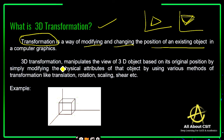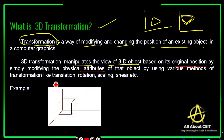A 3D transformation is going to manipulate the view of a 3D object — whatever the object that we are using, it is going to change the view of that object based on its original position. That 3D object is going to be manipulated, meaning it changes and modifies its position based on the original position, by modifying the physical attributes of that object using various methods of transformation like translation, rotation, scaling, and shearing.